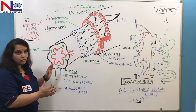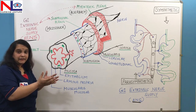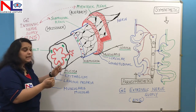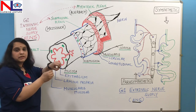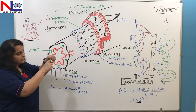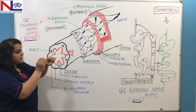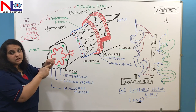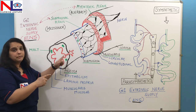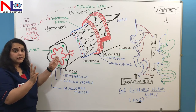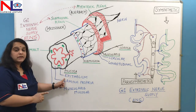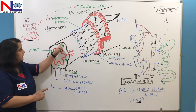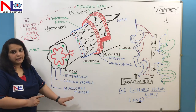The mucosa is the lining that encloses the food — it faces the lumen. The lumen is the hollow space inside the tube through which food passes. The mucosa is again divided into three parts: the innermost is the epithelium, then the lamina propria, and the outermost of these three is the muscularis mucosa.